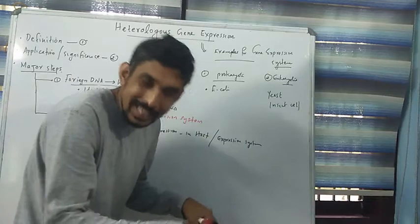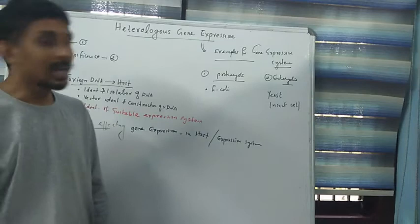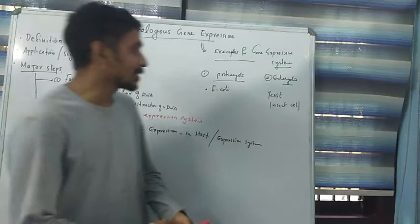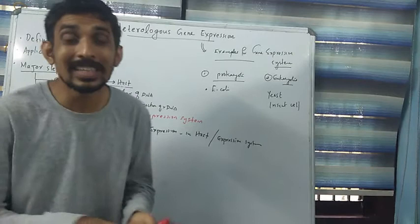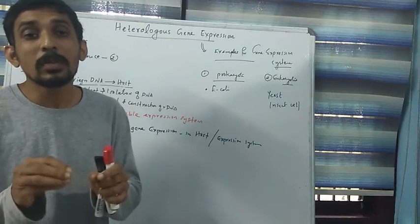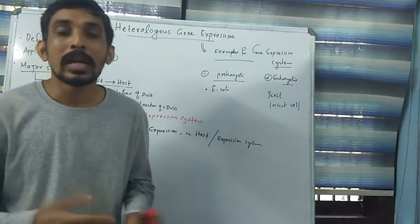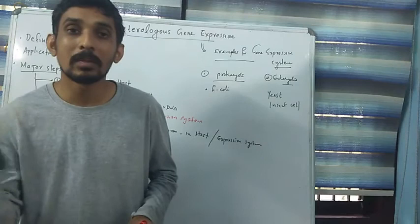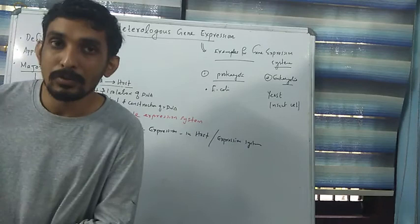A commonly used eukaryotic expression system is the yeast cell. Yeast is a unicellular fungus belonging to the Ascomycetes. Yeast is most suitable as an expression system because yeast cells can multiply rapidly within a short duration using budding. The cell cycle duration of yeast is only ninety minutes, which is why we select yeast as a candidate for the eukaryotic expression system.